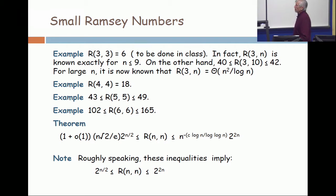On this slide we say R(3,3) is 6, to be done in class. We did it. In fact, R(3,n) is known exactly when n is 3, 4, 5, 6, 7, 8, and 9.